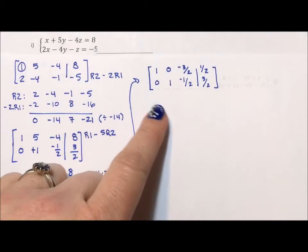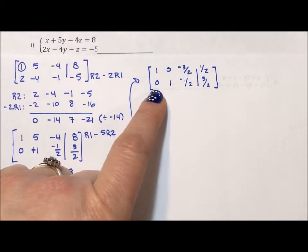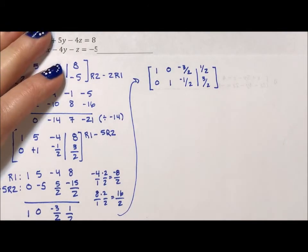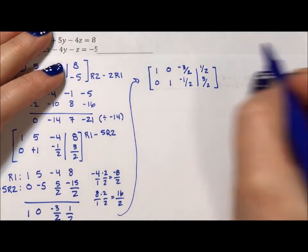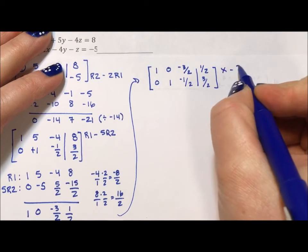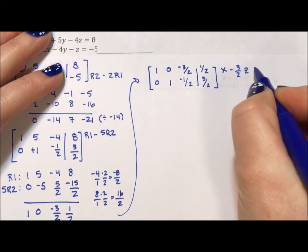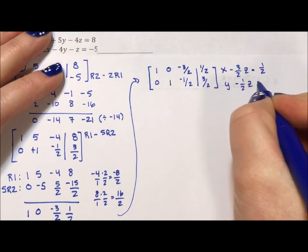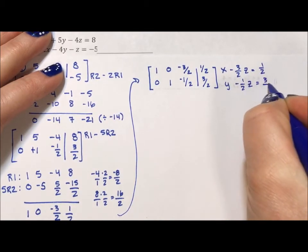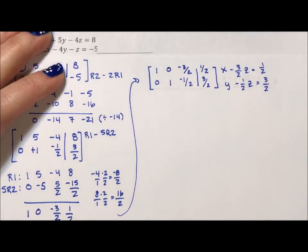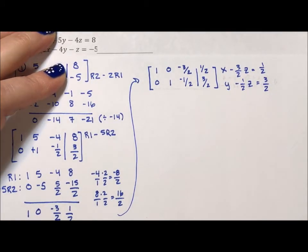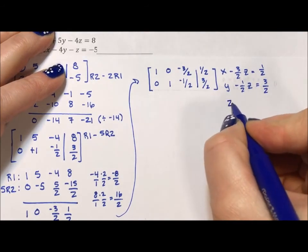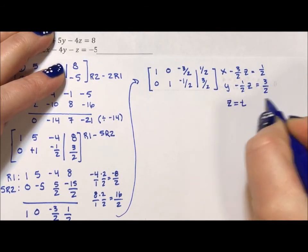Now if you look, the very beginning of my matrix right now is the first two rows, first two columns is an identity matrix. That tells me I'm done. What this really translates to is x minus 3 halves z equals 1 half, and y minus 1 half z equals 3 halves. We now have x and y in terms of z, not quite an answer. So what we do is we say set z equal to t. This is our parameter.